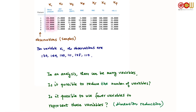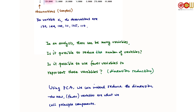In data analysis, there can be many variables. The question we would like to ask is: is it possible to reduce the number of variables — because we could have hundreds of variables — and use a few variables to represent all of those hundreds of variables? That means a reduction in dimension, and that's what we are trying to do with PCA, principal component analysis. We can reduce the dimension using fewer new variables, and these new fewer variables are what we call principal components.